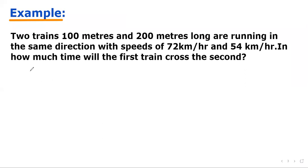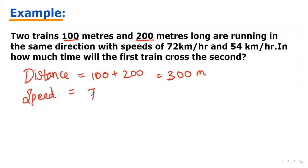So let's write down the given points. Like, as we know, the distance is nothing but the sum of two trains length. The first train is of 100 and second train is of 200. So it is very simple and easy. 300 meter. And now, speed. Speed of one train is 72 kilometer per hour and another train is 54 kilometer per hour. As we know, we need to find the difference in between these two trains. We have to subtract them. So on subtracting, we will get 18 kilometer per hour. So the relative speed is 18 kilometer per hour.